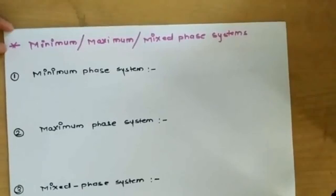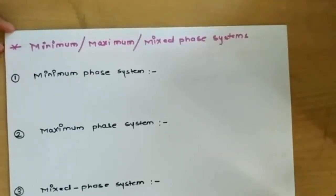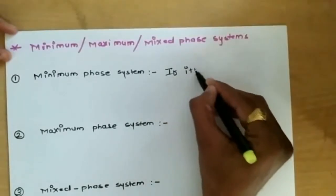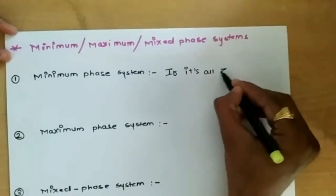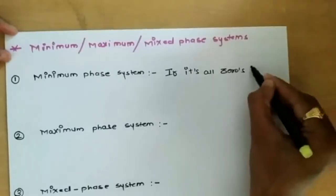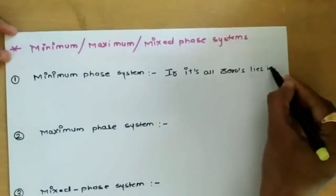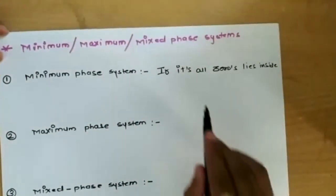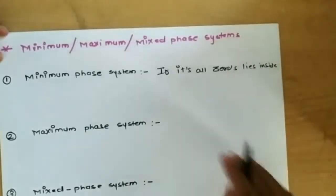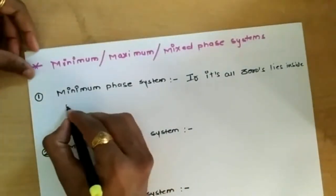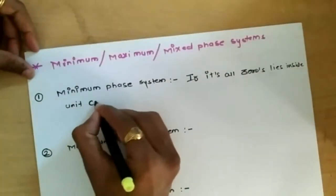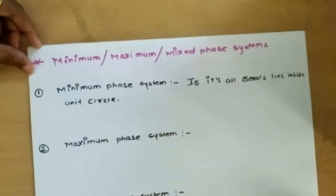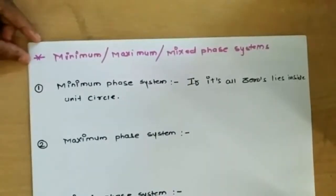A system is said to be minimum phase if all its zeros lie inside the unit circle. That means any system whose all zeros lie inside the unit circle is known as a minimum phase system. These concepts are related to the Z-transform, where we find Z on the unit circle.